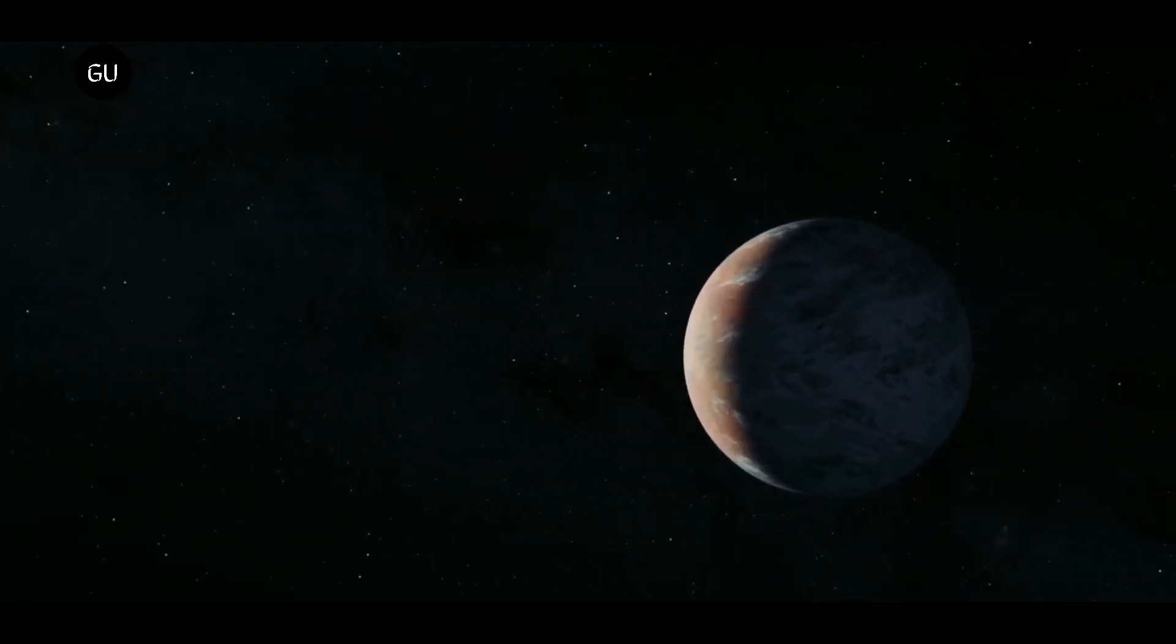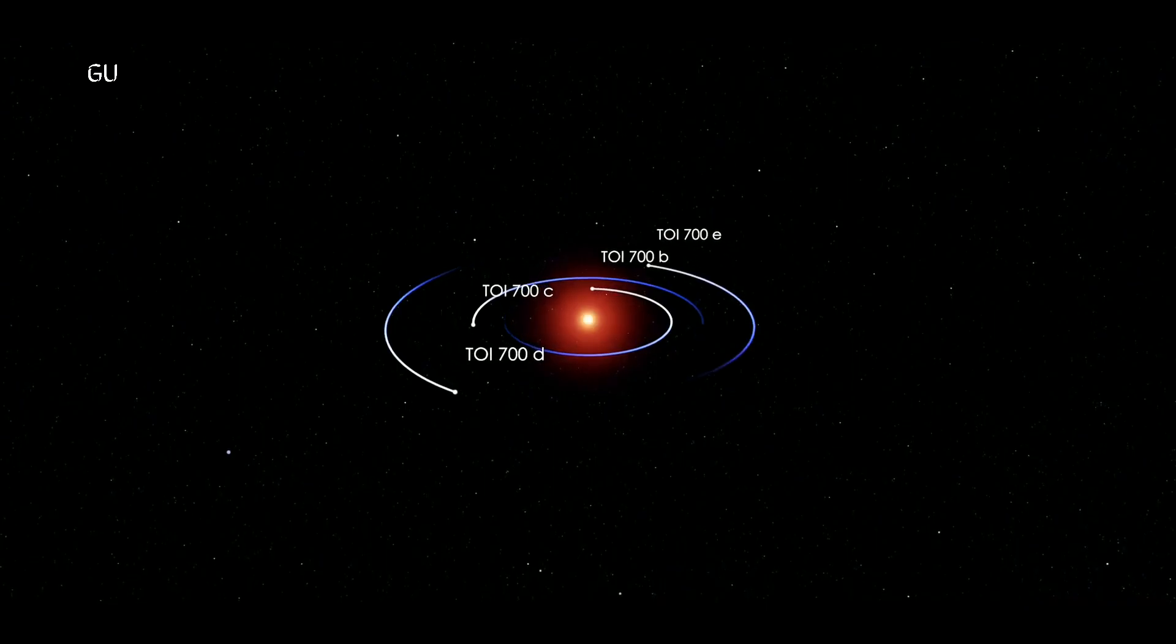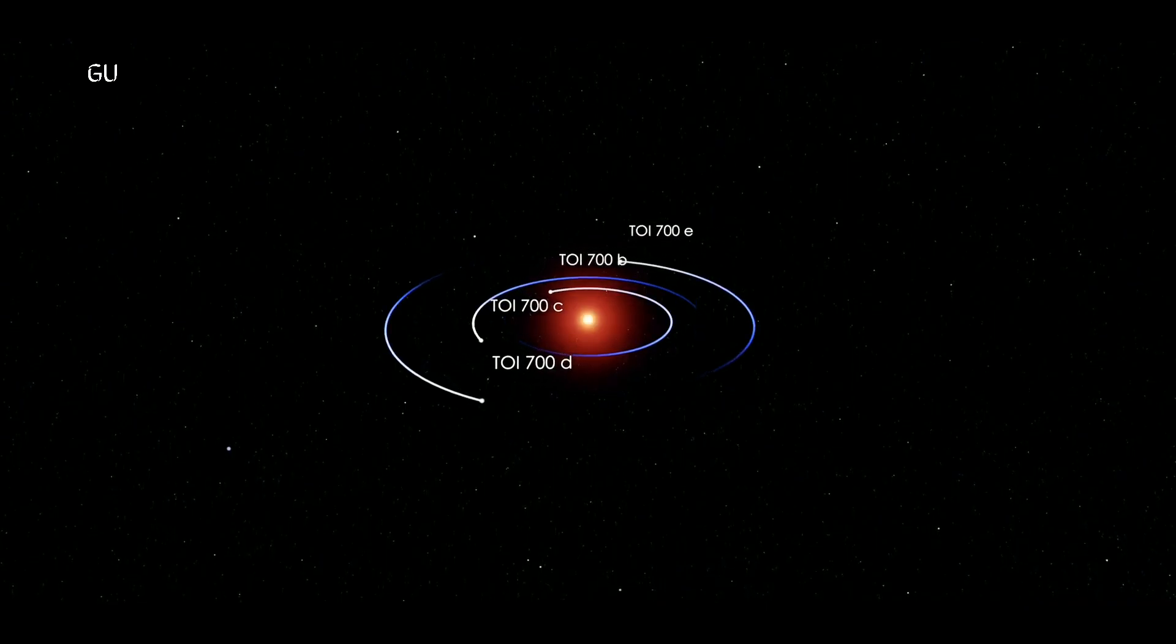This is the fourth planet discovered in the TOI 700 system. The other planets are named TOI 700B, C, and D, which is 100 light-years away.